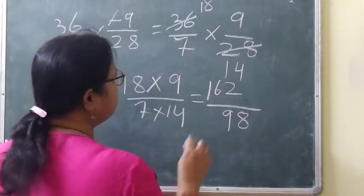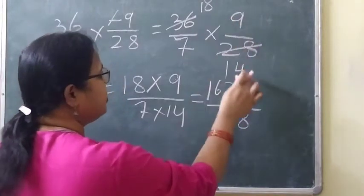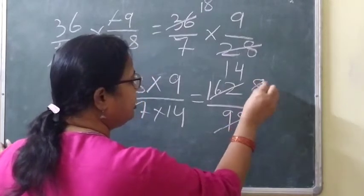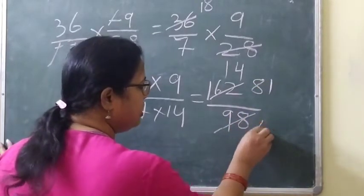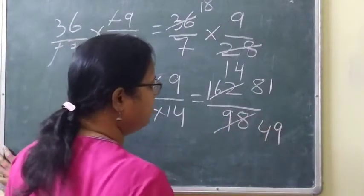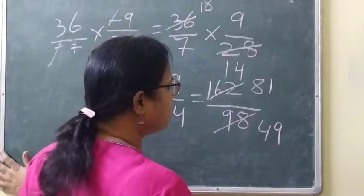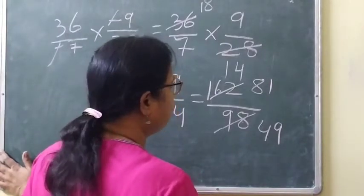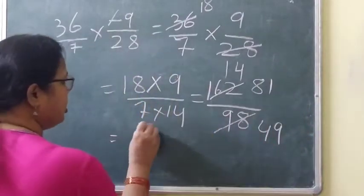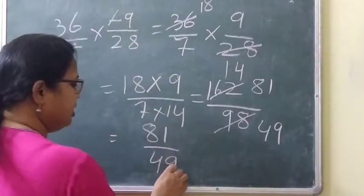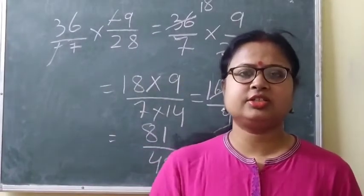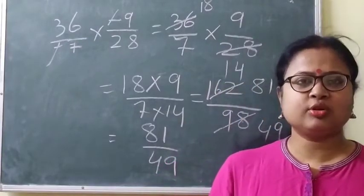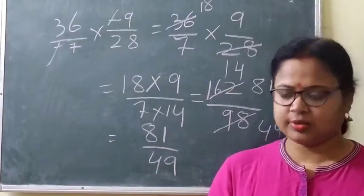Again we can cancel — this is divisible by 2. Two 8s are 16, two 1s are 2, two 4s are 8, two 9s are 18. Again, is it possible to cancel? No, it is not possible now. So the answer will be 81 by 49. If you want, you can change it to a mixed fraction. I hope you have also got the same answer.